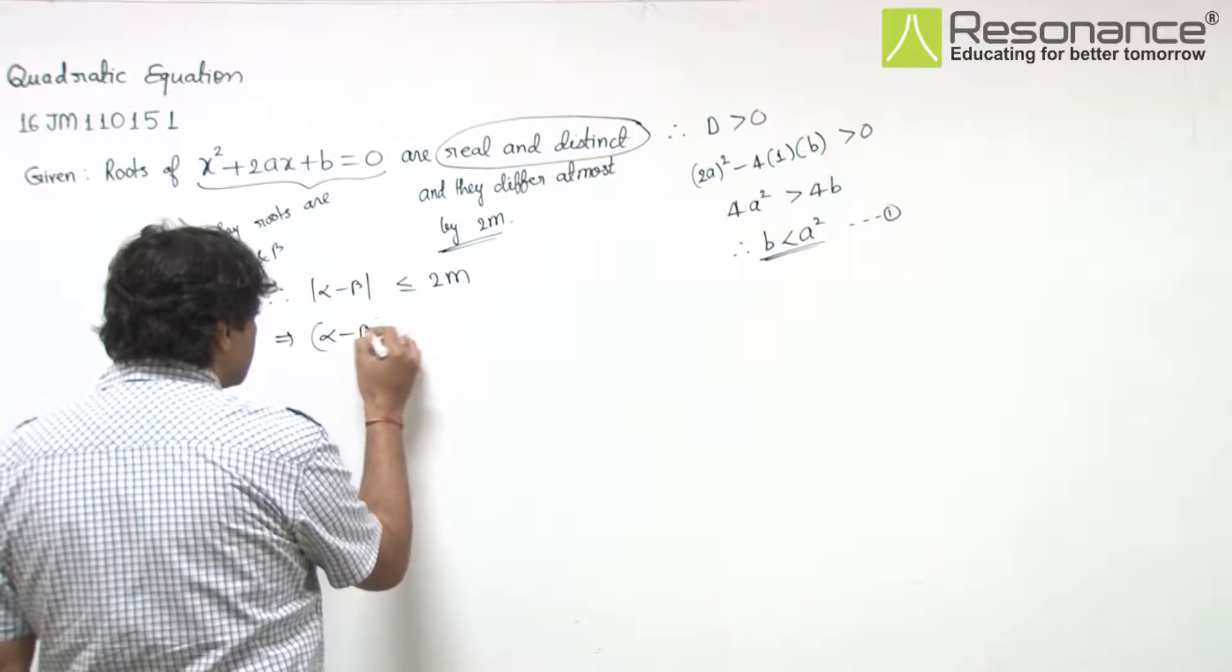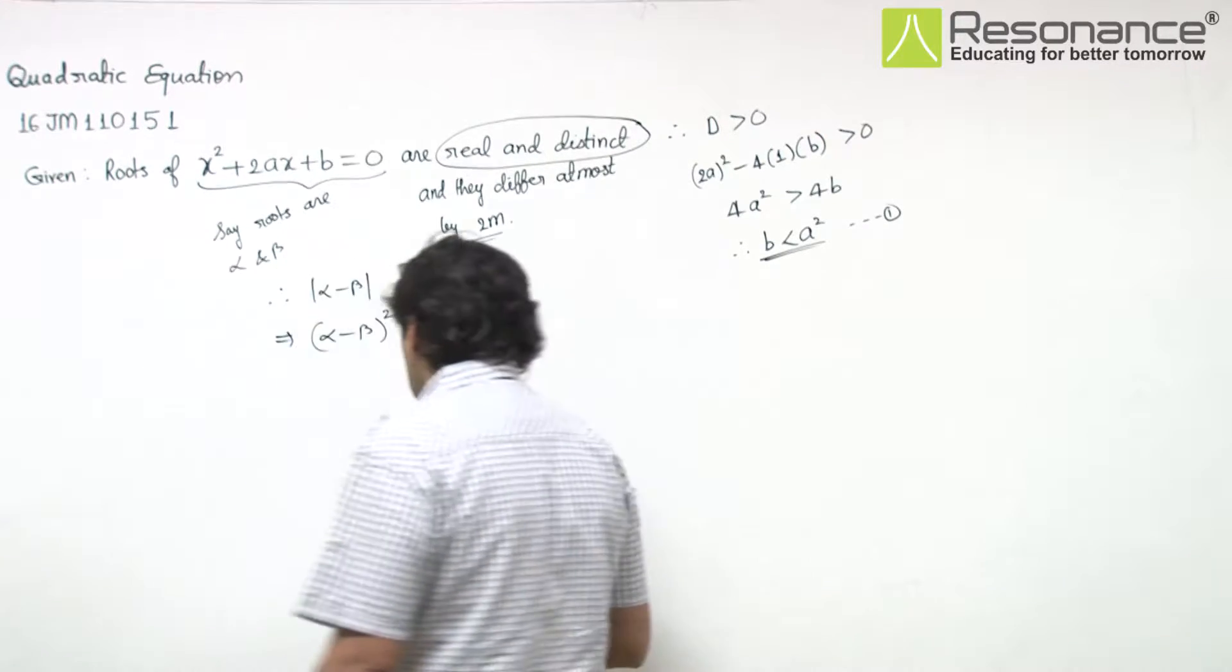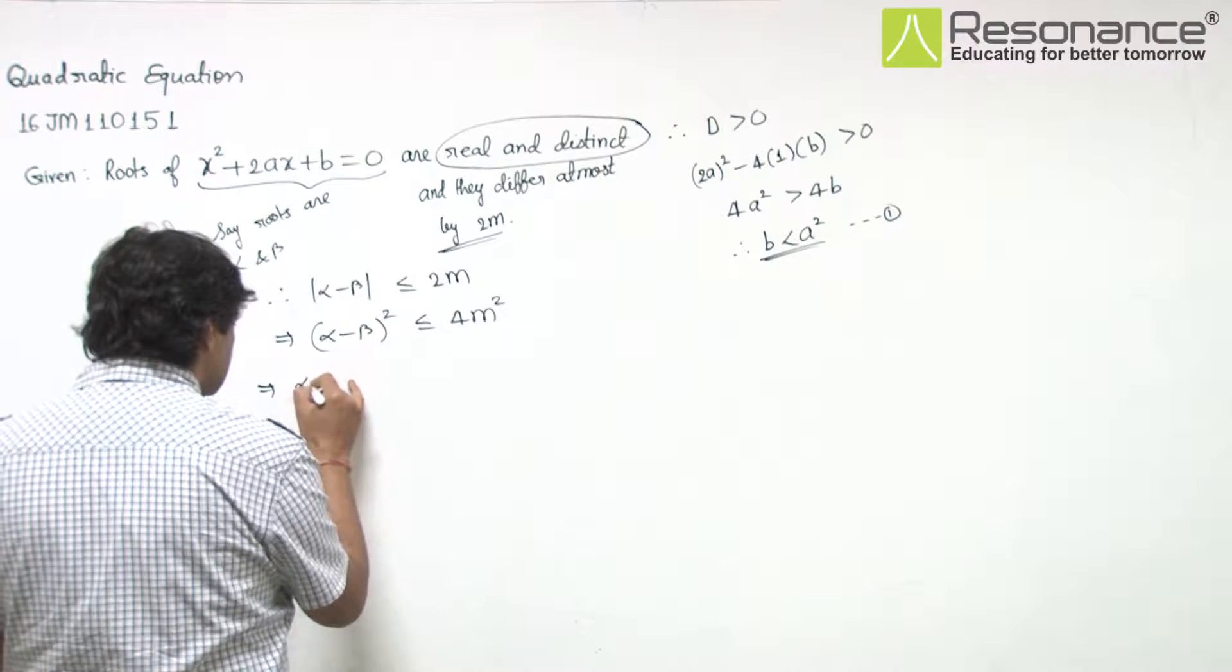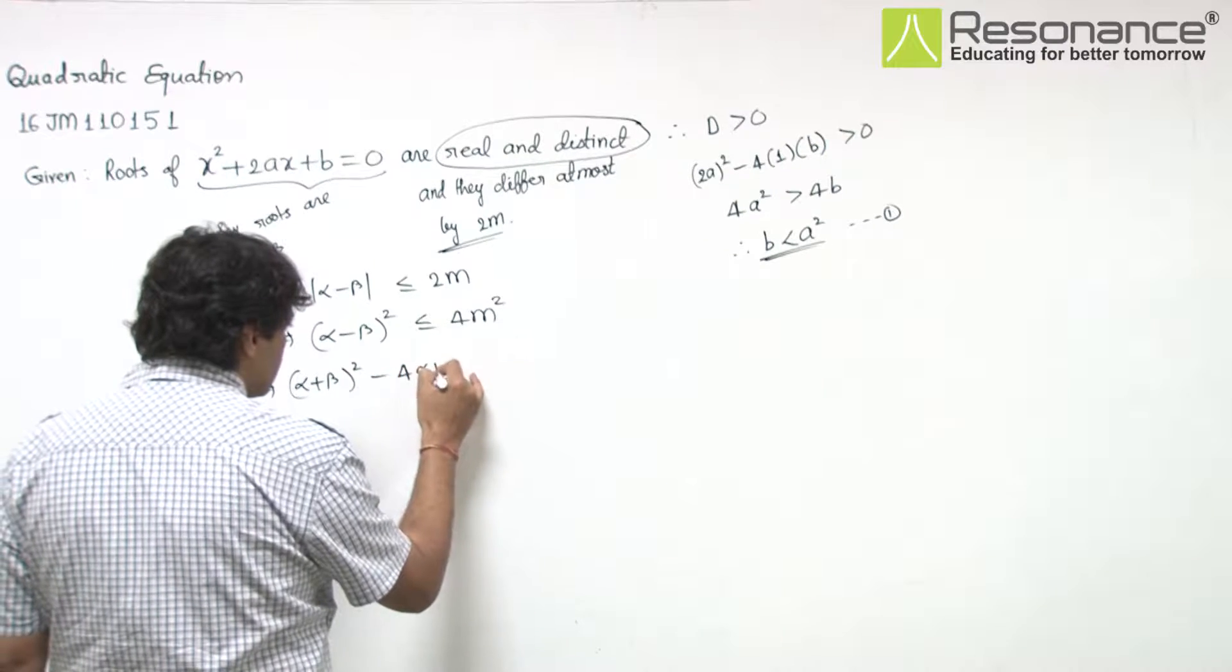Squaring, we can say that (α - β)² ≤ 4m². Now (α - β)² can be written as (α + β)² - 4αβ.